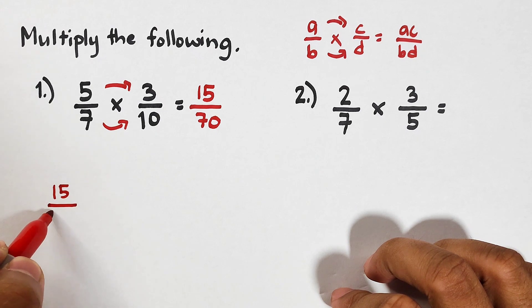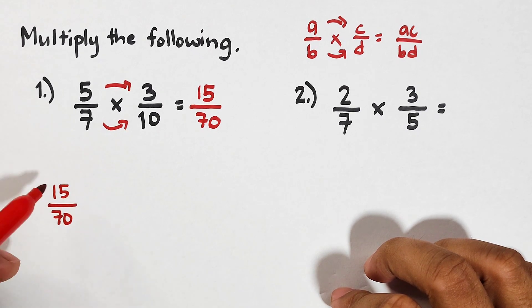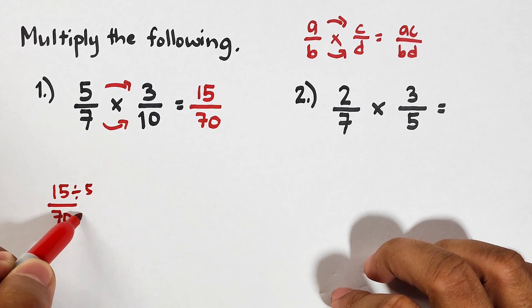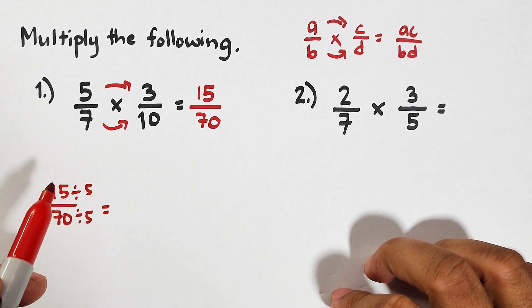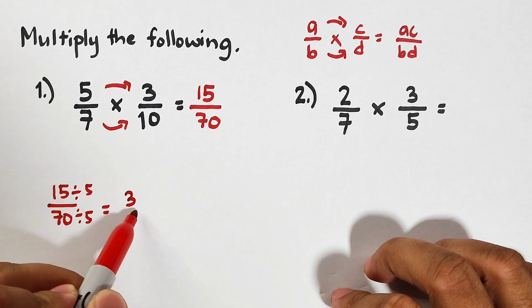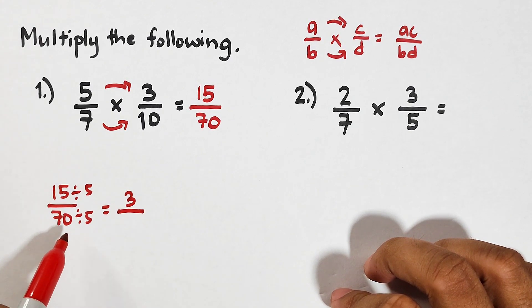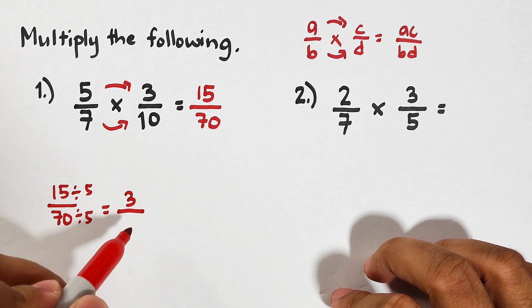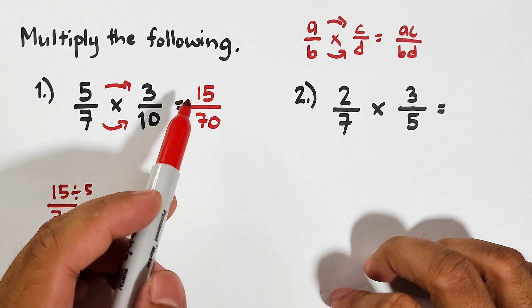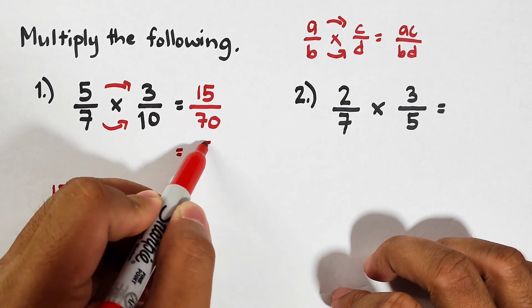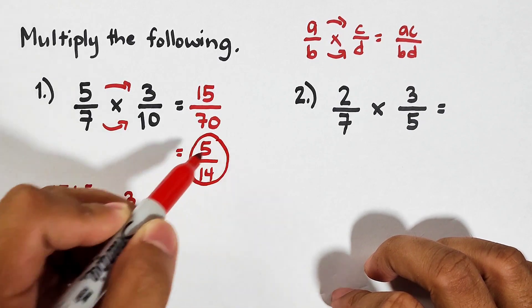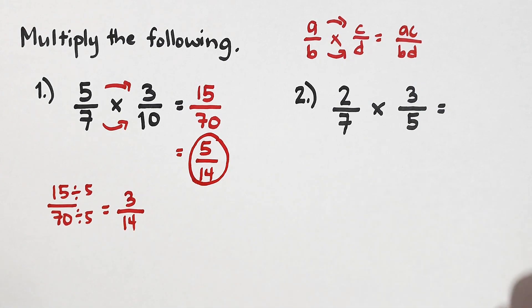The GCF of these numbers 15 and 70 is 5, so we can directly divide by 5 and divide this by 5. 15 divided by 5 is 3 over 70 divided by 5 is equal to 14. Meaning the simplified form of 15 over 70 is 3 over 14, and this is the answer for item number one.